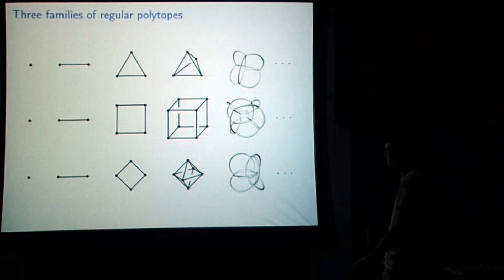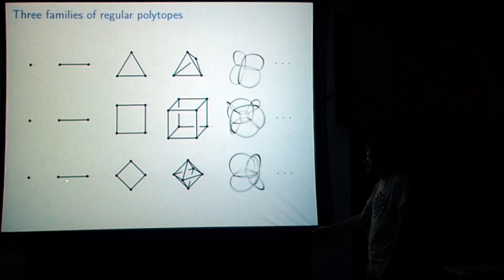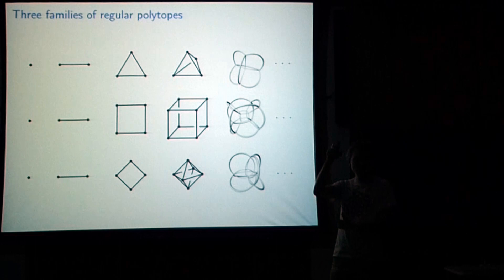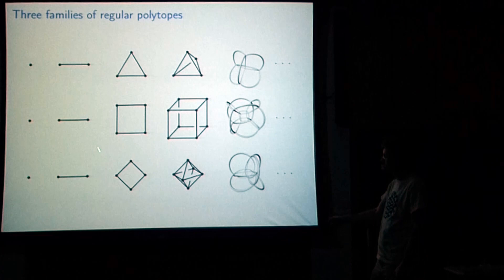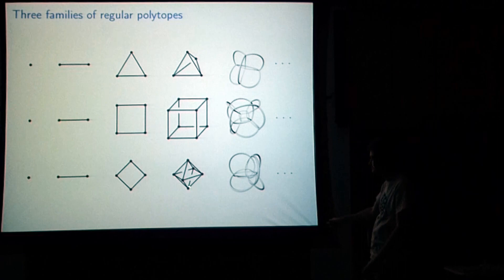And then there are the cross polytopes. Starting with a line segment inside a line, you take two points — one either side — connect the lines, and get a diamond, otherwise known as a square if you turn your head 45 degrees. Do the same thing again: take two points from the plane of the square in opposite perpendicular directions, connect the lines, and get an octahedron. The four-dimensional version is called the 16-cell. This sequence continues forever.